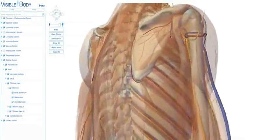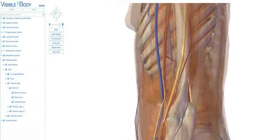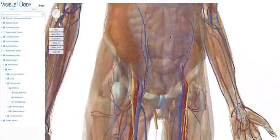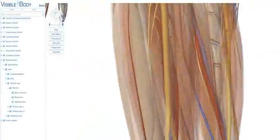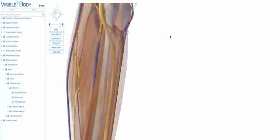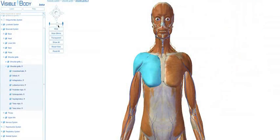Visible Body is a highly detailed, anatomically accurate 3D model that helps students, instructors, and doctors visualize anatomy. Visible Body includes over 1,700 anatomical structures.